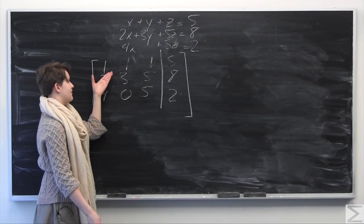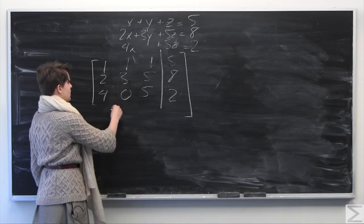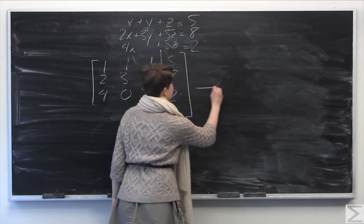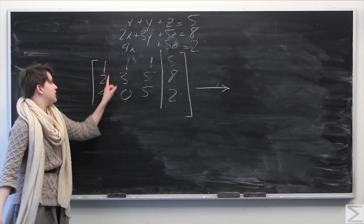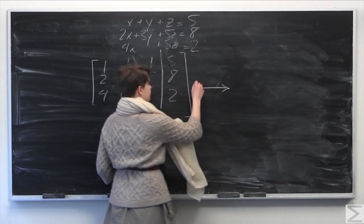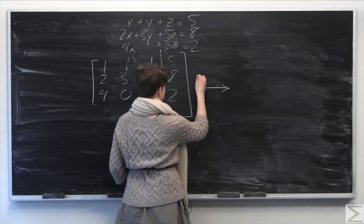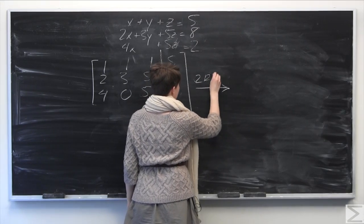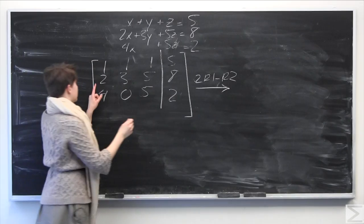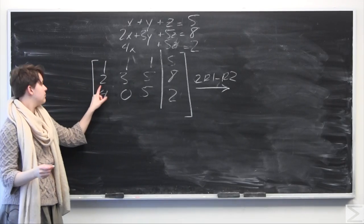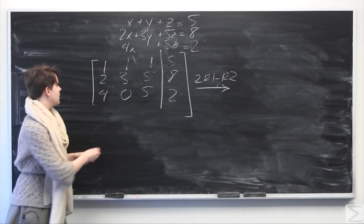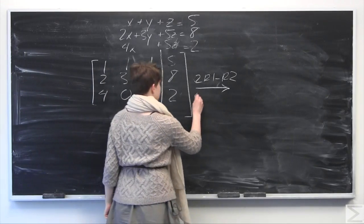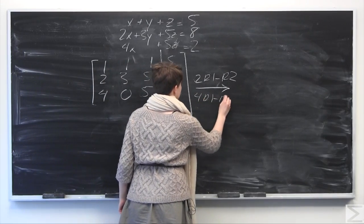It really helps to go column by column rather than ad hoc. Here we nicely have the leading one already in the first position, so we need to clear out the rest of this column. I'm going to replace the second row with two times row one minus row two, just trying to clear out the second row's first column entry. Same thing with the third row: I'm going to multiply four times row one and subtract row three — so four times row one minus row three.